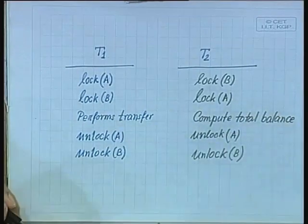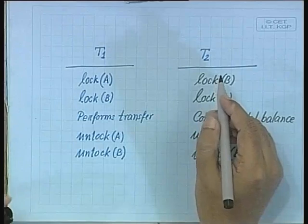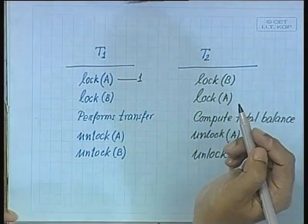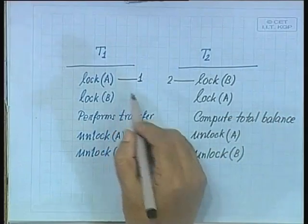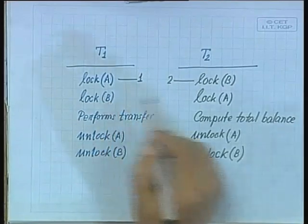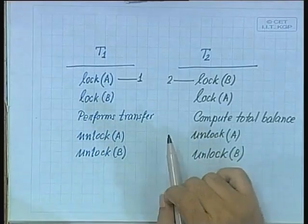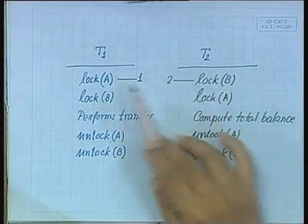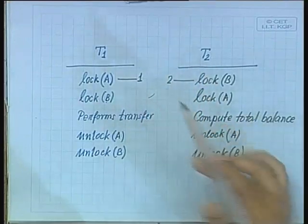If these two are concurrent transactions, it is possible that after T1 locks A and T2 locks B, now T1 is waiting to lock B and T2 is waiting to lock A, so they are now in a deadlock. This is the standard scenario where neither T1 nor T2 can progress, because they need locks on some items which are currently locked by other transactions. We have a cyclic wait condition: T1 is waiting for T2 and T2 is waiting for T1.